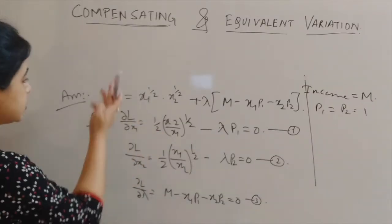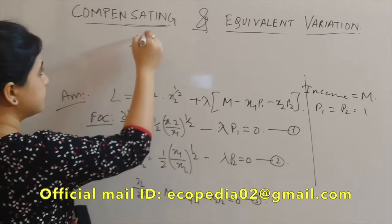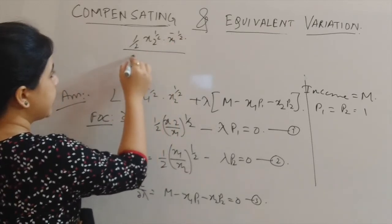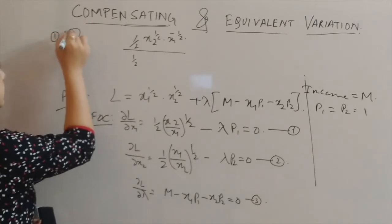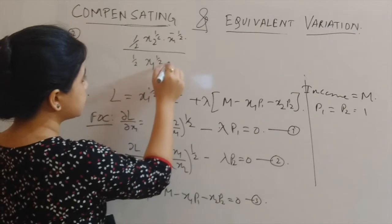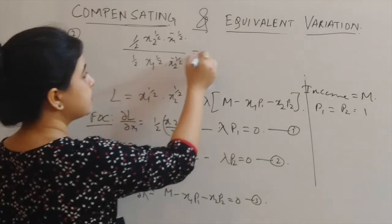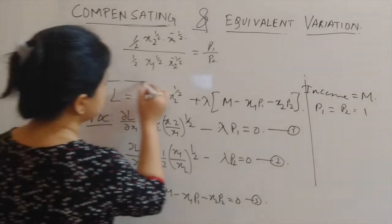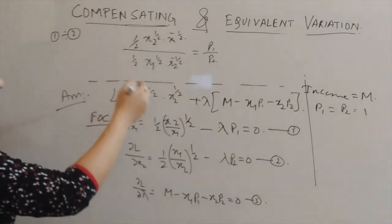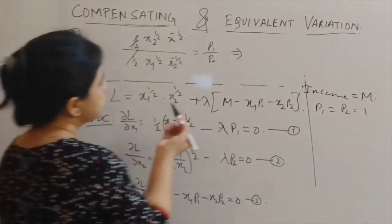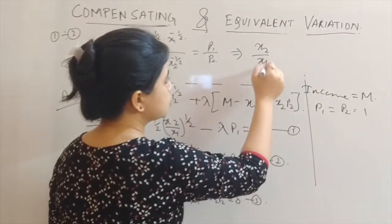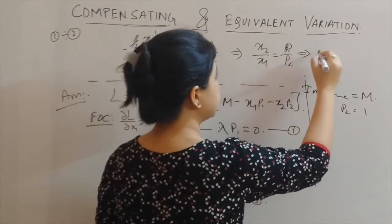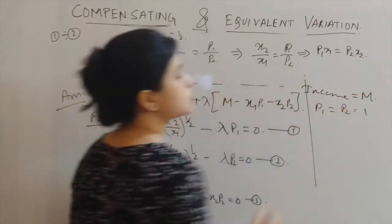From equations 1 and 2, dividing equation 1 by equation 2, we have: half·(x2/x1)^half divided by half·(x1/x2)^half equals p1/p2. The halves cancel out, and we ultimately get x2/x1 equal to p1/p2, which means p1·x1 equal to p2·x2. This is our equation 4.